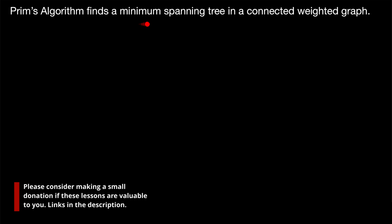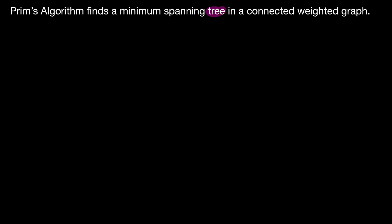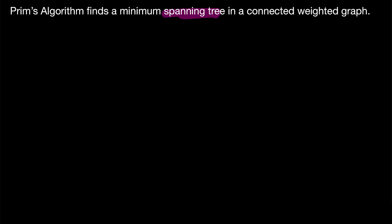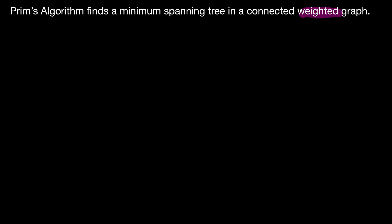Prim's algorithm finds a minimum spanning tree in a connected weighted graph. A tree is a connected graph with no cycles. A spanning tree of a graph G is a subgraph of G that is a tree and contains all vertices of G. The graph has to be connected because only connected graphs have spanning trees, and it has to be weighted because it is the weight of the spanning tree that we are minimizing. Every connected graph has a spanning tree, and oftentimes they may have multiple spanning trees. We use Prim's algorithm to find a spanning tree of minimum weight.